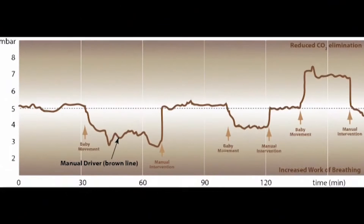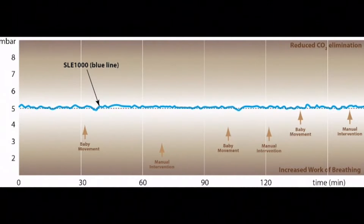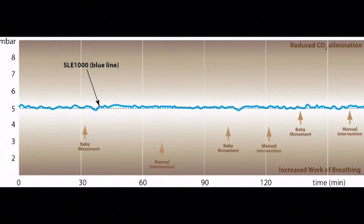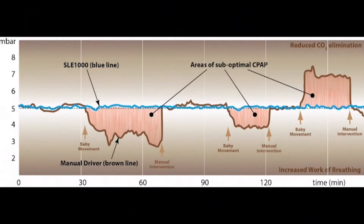The user must manually adjust the flow for changes in CPAP pressure. This graph is a simulation of CPAP using a conventional flow driver. It shows irregular CPAP delivery, which could be due to misplacement or blocked prongs or changes in lung mechanics. This second graph is a simulation of CPAP using the SLE1000 adaptive flow driver, showing the maintenance of a constant CPAP due to automatic adaptive flow compensating for pressure fluctuations. Superimposing these two graphs shows the constant CPAP delivery of the SLE1000 compared with conventional drivers. The shaded areas show periods of suboptimal CPAP when using a conventional driver.